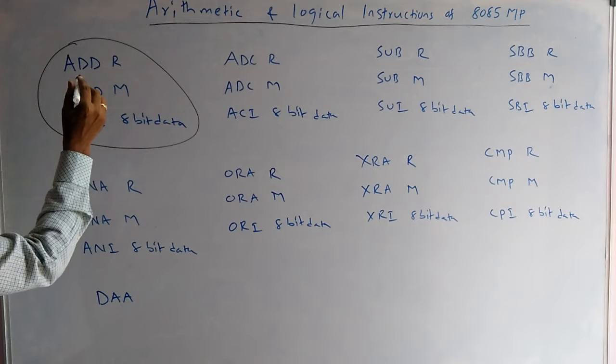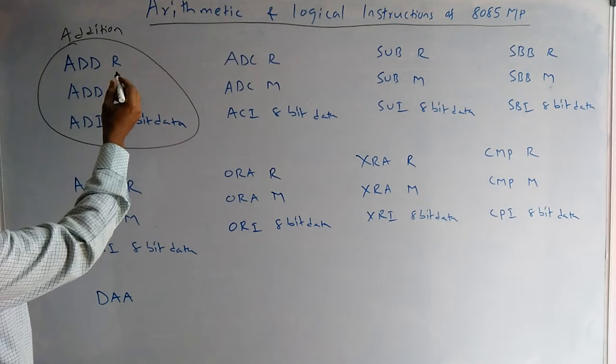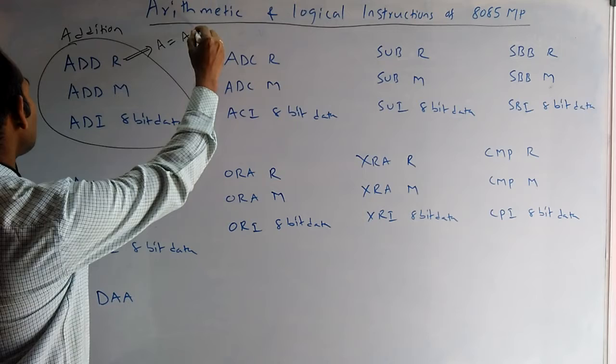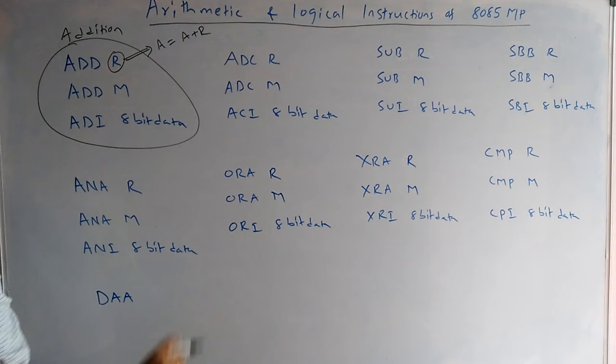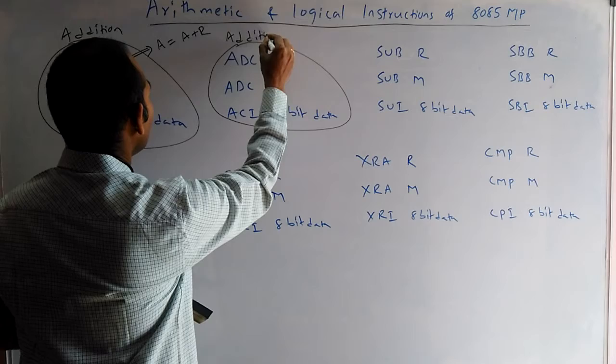These three are addition instructions. In the 8085 microprocessor, one value is always in the accumulator, the second one is in the instruction, and the result will always be stored in the accumulator. That means A equals A plus R. This is normal addition, and this is addition with carry.